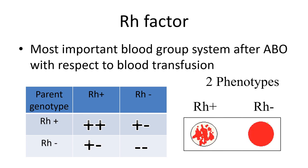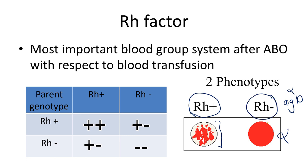In a blood sample, if you add a commercially prepared antibody against the RH factor — antigen D — and you end up getting agglutination, this means antigen D or the RH factor is present, and the person is RH positive. However, if there is no agglutination, antigen D is absent and the person is RH negative.